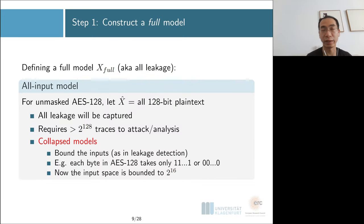How can we define a model that captures all the data-dependent leakage? This might sound mission impossible at first glance. But if you think about it, assuming we're attacking an unmasked AES with fixed key, every single intermediate state will be a deterministic function of all the input plaintext. As a consequence, all the data-dependent leakage will also be a deterministic function of all the input.